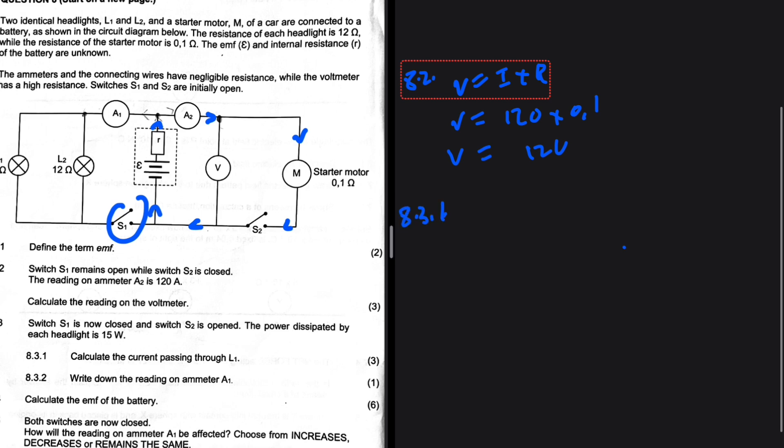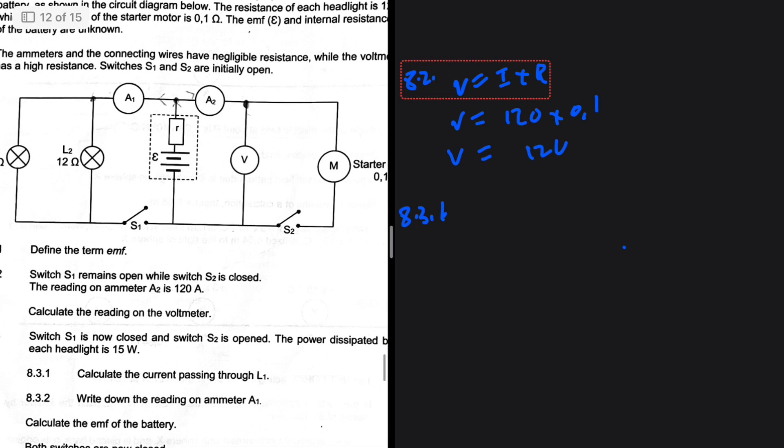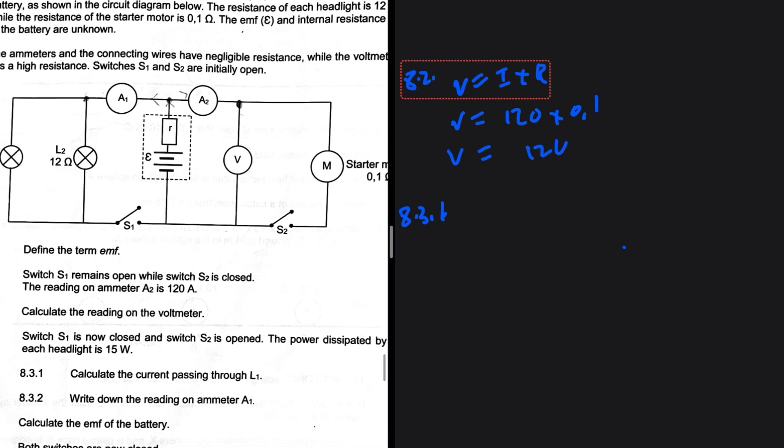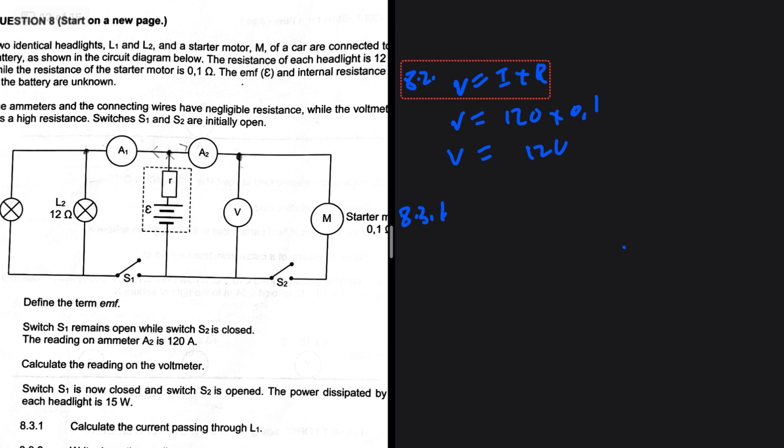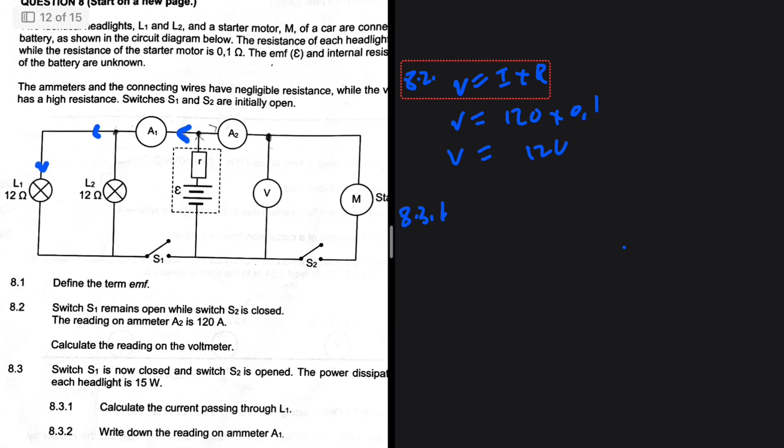8.3.1: Switch S1 is now closed and switch S2 is open. So let's adapt to the statement. So S1 is closed and S2 is open. So it means that the current flows in this direction. Okay, there we go. But it's going to divide there because we have L1 and L2, the two headlights.